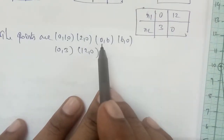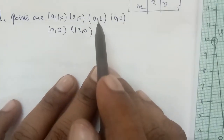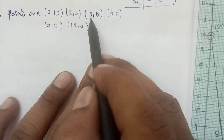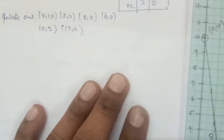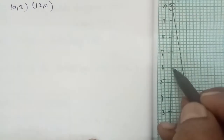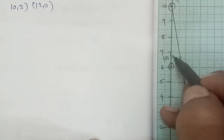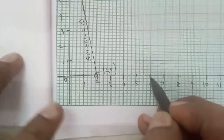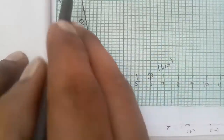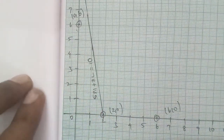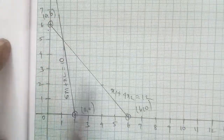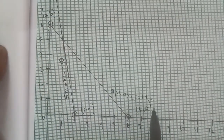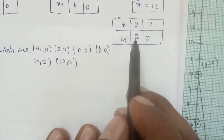The second equation x1 plus x2 equal to 6 passes through points (0,6) and (6,0). We plot x1 is 0, x2 is 6 at point (0,6), and x1 is 6, x2 is 0 at point (6,0), and join them. The third equation x1 plus 4x2 equal to 12 passes through points (0,3) and (12,0), which we also plot and join.